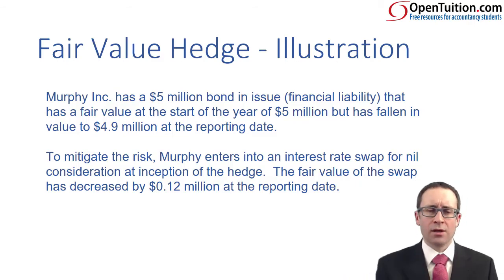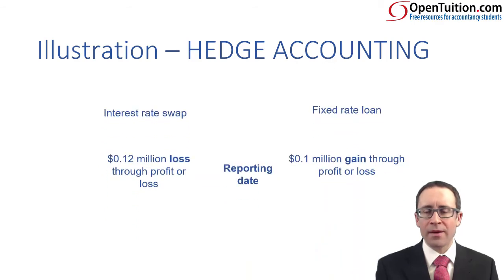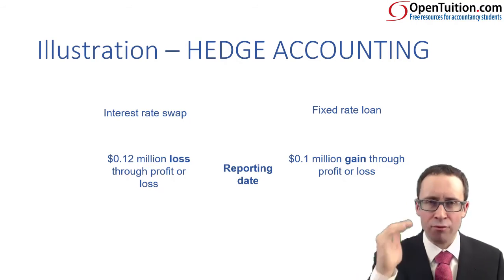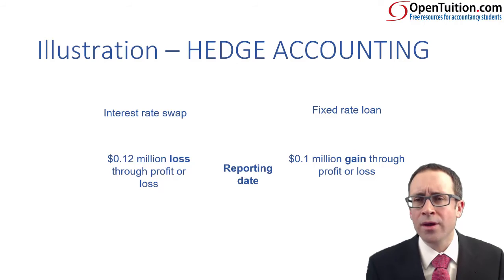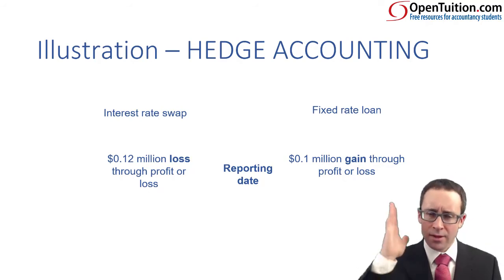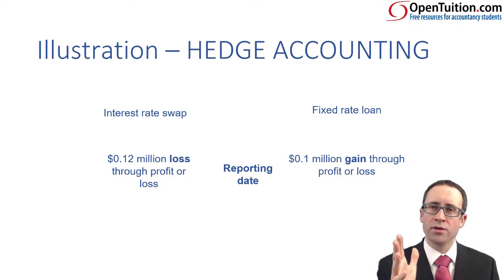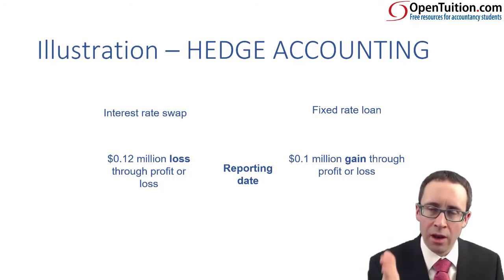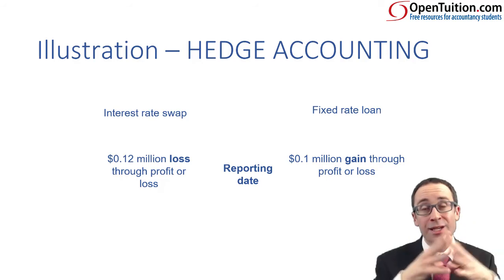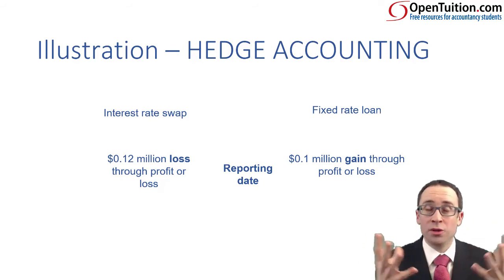So what have we got? On the fixed rate loan — your liability — the value has fallen from a fair value of 5 to 4.9 million, giving a 0.1 million gain through profit or loss. If that loan were being treated at amortised cost normally, that would be your normal financial instruments rule. But not now — you're protecting the fair value, so gains and losses go through profit or loss. On the interest rate swap, given you've got a gain on the loan being the item, there must be a loss on the instrument of 0.12 million — and that also goes through profit or loss. You can see that we're matching them up in the same financial statements and in the same period.